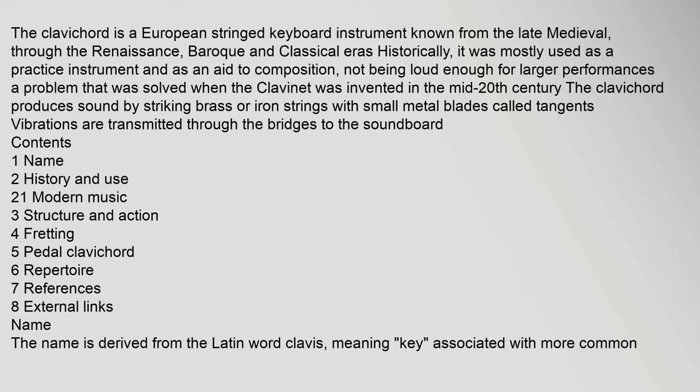The clavichord is a European stringed keyboard instrument known from the late medieval, through the Renaissance, Baroque and classical eras. Historically, it was mostly used as a practice instrument and as an aid to composition, not being loud enough for larger performances — a problem that was solved when the clavinet was invented in the mid-20th century. The clavichord produces sound by striking brass or iron strings with small metal blades called tangents. Vibrations are transmitted through the bridges to the soundboard.